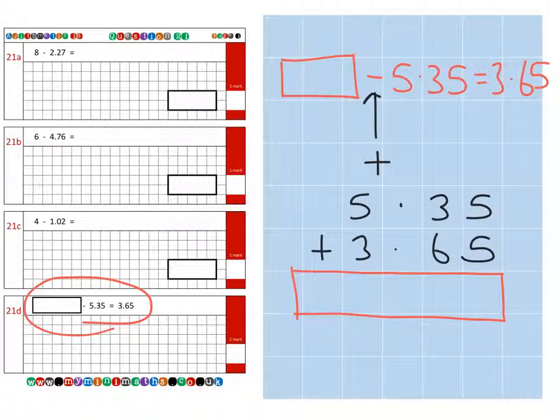So five hundredths add five hundredths is ten hundredths, carry it over. We've got one tenth add three tenths add six tenths which is ten tenths, carrying over into the units column. And then we have one unit, five units, and three units which is nine units. So we have a final answer of 9.